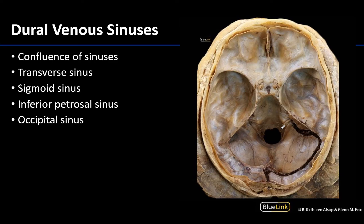Last image — same superior view, but note that the tentorium cerebelli has been removed to get a better view of some of the deeper and most distal sinuses. You can see a bit of the confluence of sinuses here and how it flows into the transverse sinus, which I'm tracing here. Note that only the right transverse sinus has been opened, that's why it looks so blue here. Once at the level of the petrous part of the temporal bone, there is a name change of this sinus into the sigmoid sinus — here is your sigmoid sinus, where it's making that sharp turn inferiorly.